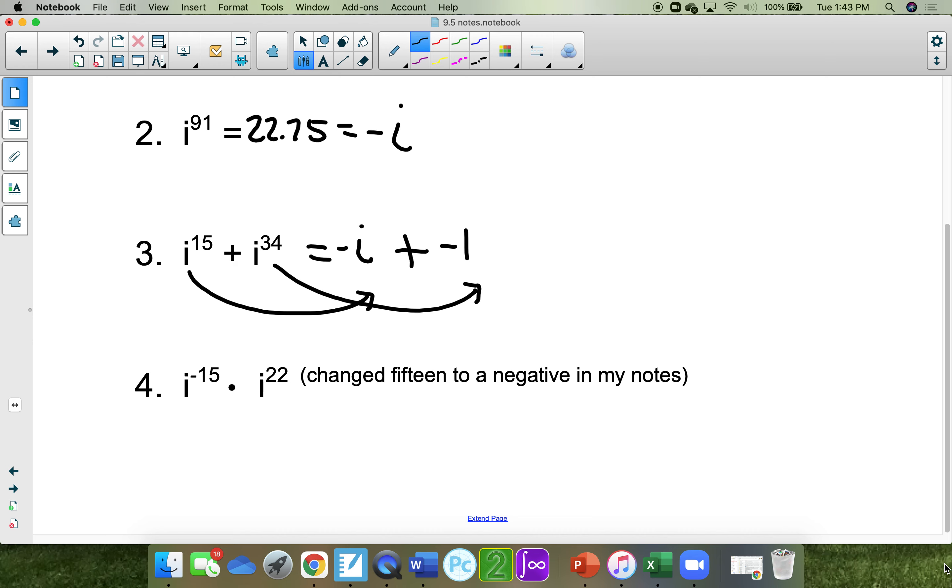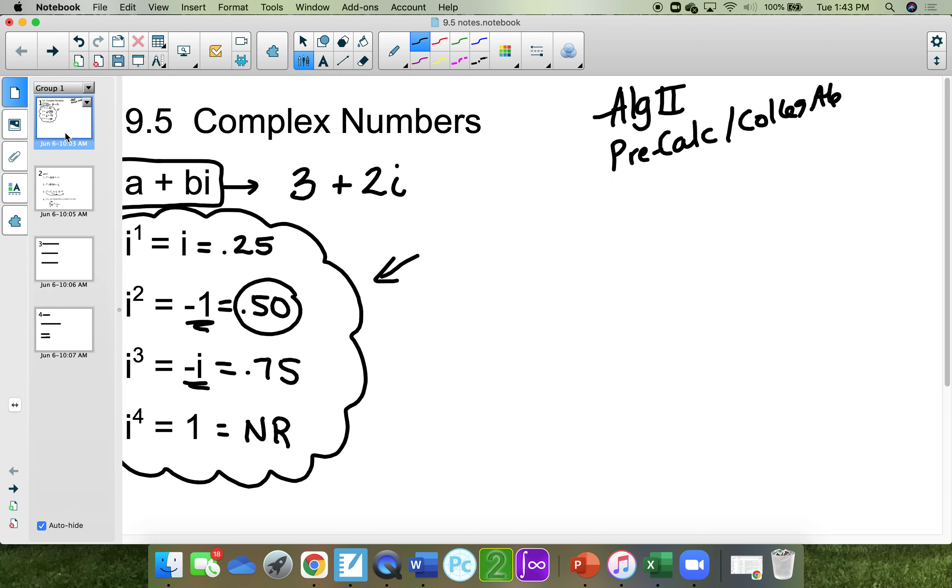I changed 15 to a negative in my notes. So just to keep this in mind, if you see i to the 22nd, I'm going to bring this one down into i to the 15th. And I know that i to the 15th from up above is a negative i, and i to the 22nd is 5.5, which is negative 1.